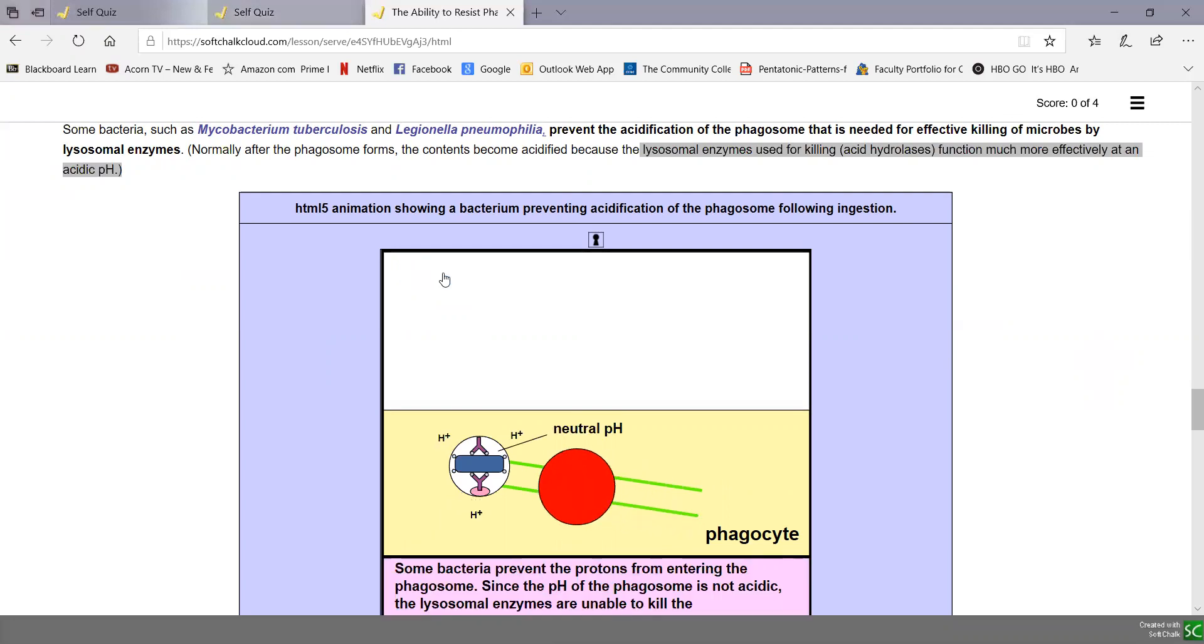The phagosome remains neutral when the digestive chemicals are dumped on the bacteria. It's the wrong pH and the bacteria are not very effectively killed. That allows them to resist killing by the acid hydrolases within the lysosome.